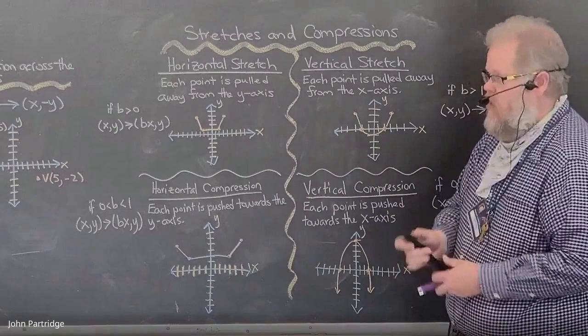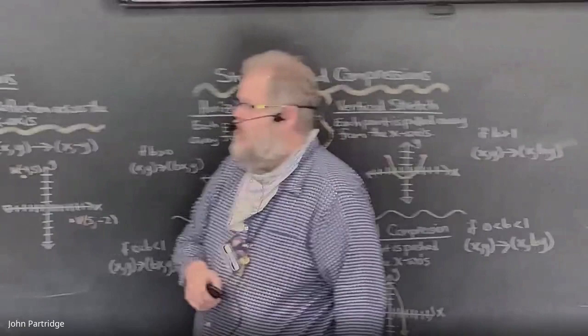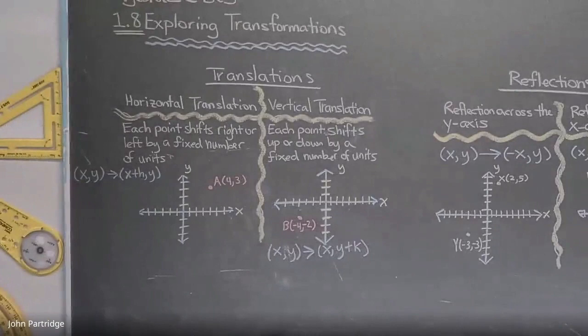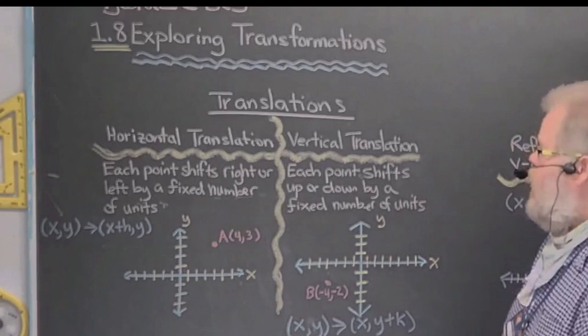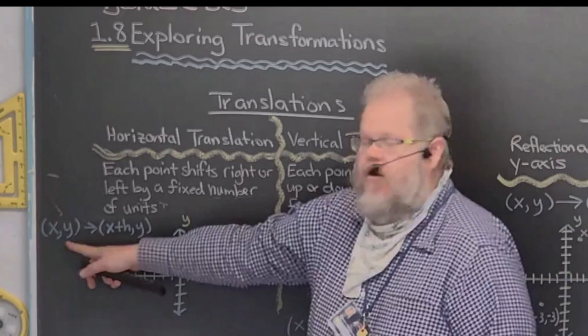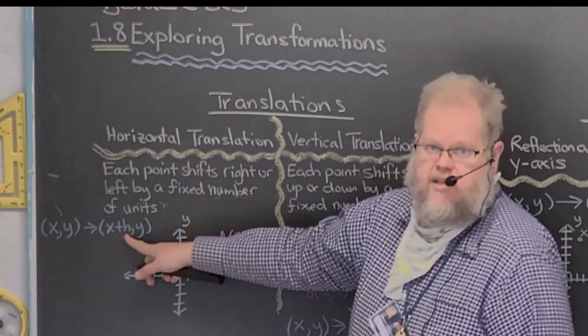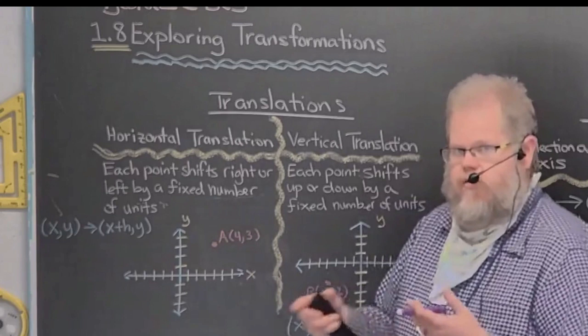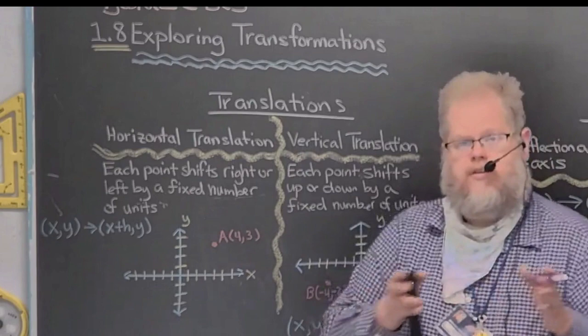Let's talk about translations and figure out how they work. There are two kinds of translations: horizontal and vertical. In a horizontal translation, each point shifts right or left by a fixed number of units. We take the ordered pair (x, y) and add a real number H to the x component. H can be positive or negative. If H is positive, this is a shift to the right. If H is negative, this is a shift to the left.